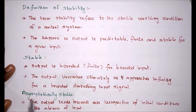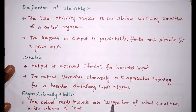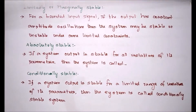For asymptotically stable, the output tends towards zero irrespective of initial condition in the absence of input. Whatever may be the initial condition, if we remove the input, the output will reach zero. That is called asymptotically stable.